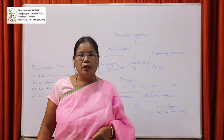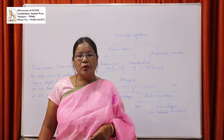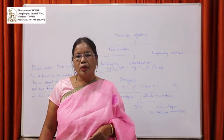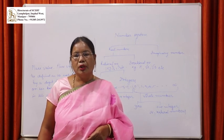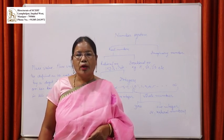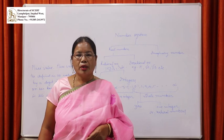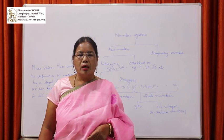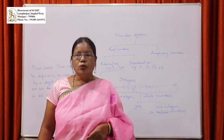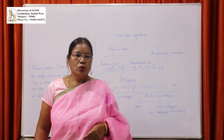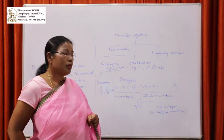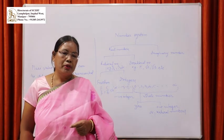Rational numbers can be defined as numbers which can be put in the form of P by Q, where P and Q are integers and Q is not equal to 0.